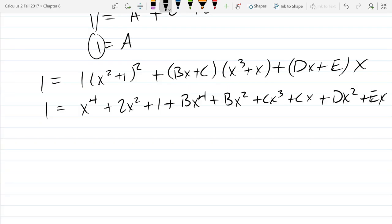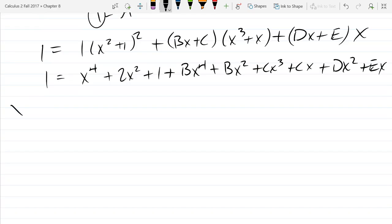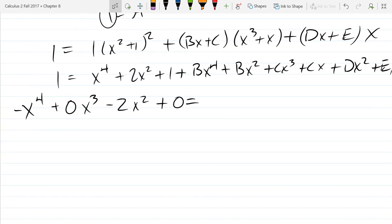And we'll subtract the determined polynomial. So negative x to the fourth minus. I'm going to write this as plus zero x cubed. I know there's no x cubed term, but I don't want to forget that that means there's zero x cubed. Minus 2x squared. We got minus 1 plus 1. So I'll write that as plus zero.